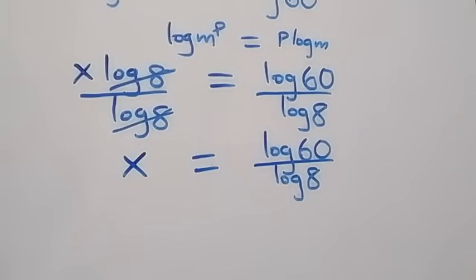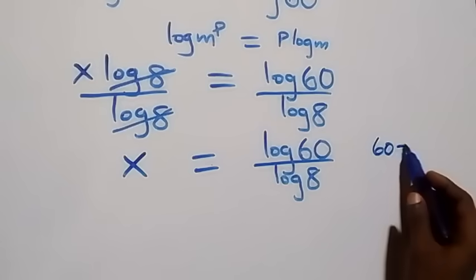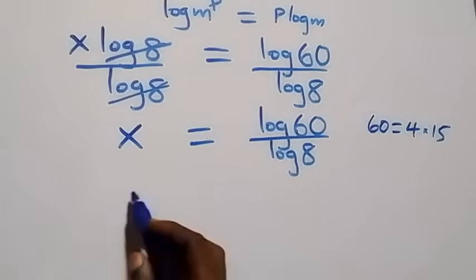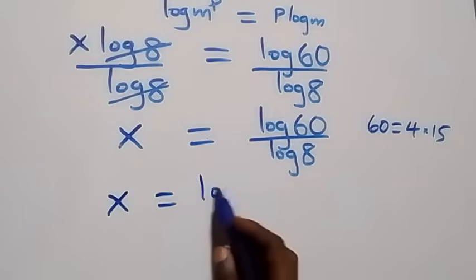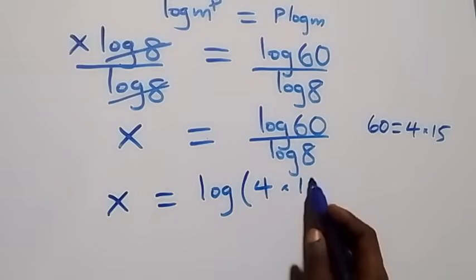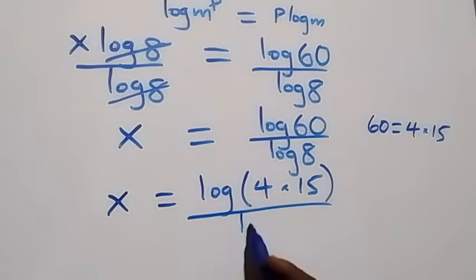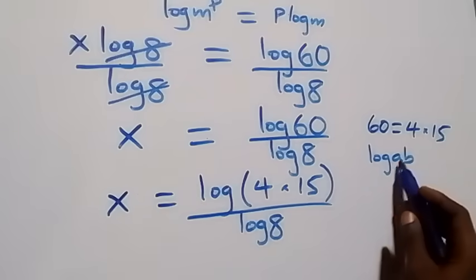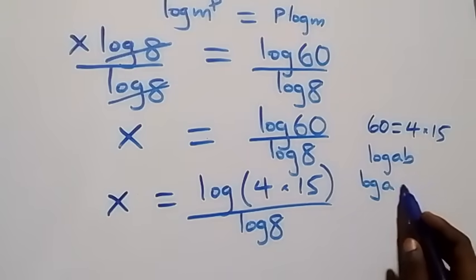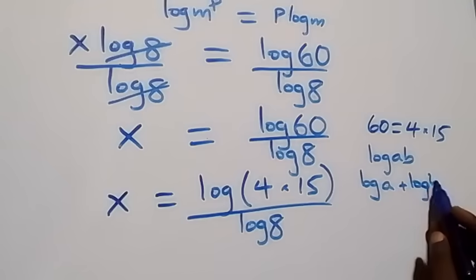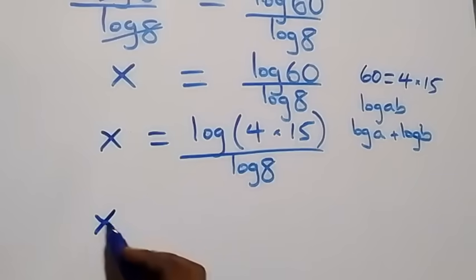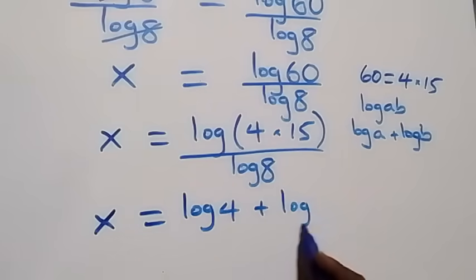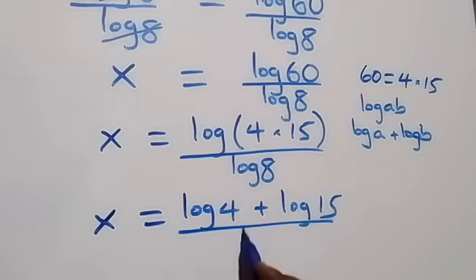We can express 60 as 4 times 15, so x equals log(4 times 15) over log 8. Applying the product rule of logarithms — log(a times b) equals log a plus log b — this becomes x equals (log 4 plus log 15) over log 8.